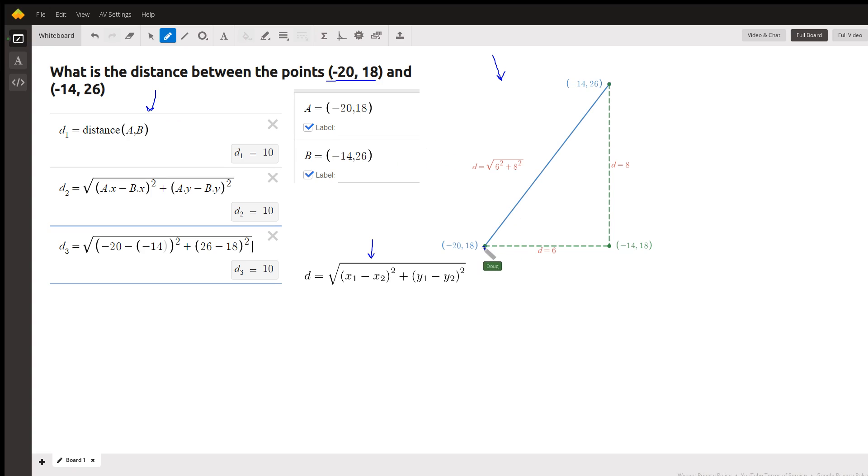So what's happening is that if we plot the point negative 14, 18, which is the intersection of the horizontal line through negative 20, 18, and the vertical line through negative 14, 26, we get this point right here, and that creates a right triangle, and we can calculate this horizontal distance by